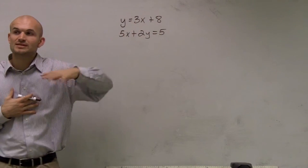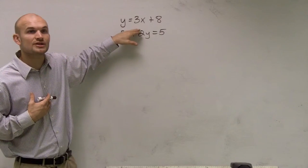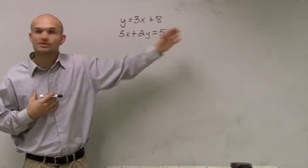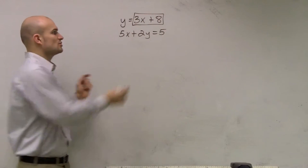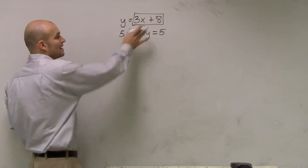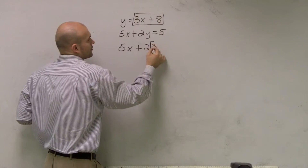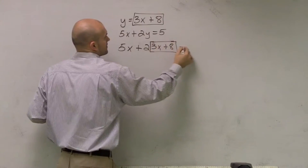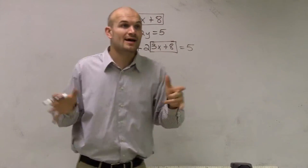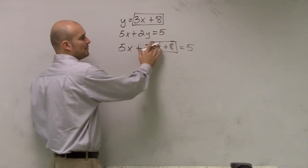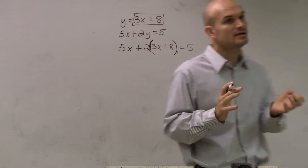When doing substitution, it's important and helpful when you have a variable that's already solved. Here y is solved in the top equation: y equals 3x plus 8. So in the second equation, instead of writing y, I write what y represents — 3x plus 8. That gives me 5x plus 2 times (3x plus 8) equals 5.